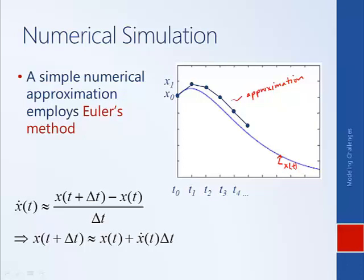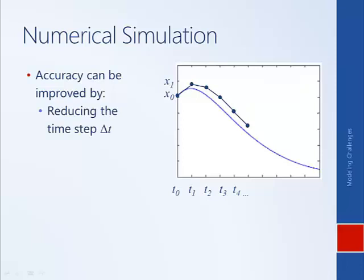Think about how we might improve the accuracy of our numerical simulation. One way is to use a smaller time step, making delta-t smaller — the time between t₀ and t₁ shorter. Another way is to use a higher-order solver. Euler's method is a first-order solver, doing linear extrapolation based on a single point in time. Higher-order solvers — second-order, third-order — use parabolas or cubics and multiple instances in time to get a smoother, more accurate solution.